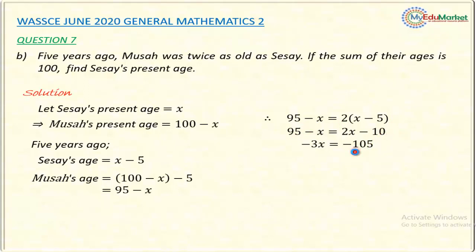So minus 10 minus 95 gives minus 105. Next, divide both sides by negative 3. After dividing, the left-hand side gives X, and 105 divided by negative 3 divided by negative 3 gives positive 35 — because a negative divided by a negative is positive. So Cissi is 35 years old.